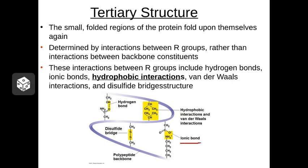Here we have an ionic bond. Here we have a disulfide bridge between two sulfur atoms. Here we have a hydrogen bond. It just depends on which R groups are present and their position as to which kinds of bonds will form.